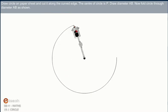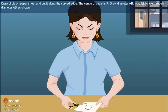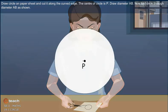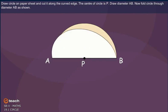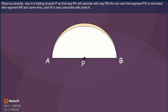Draw a circle on paper sheet and cut it along the curved edge. The center of a circle is P. Draw diameter A, B. Now fold circle through diameter A, B as shown. Observe carefully.